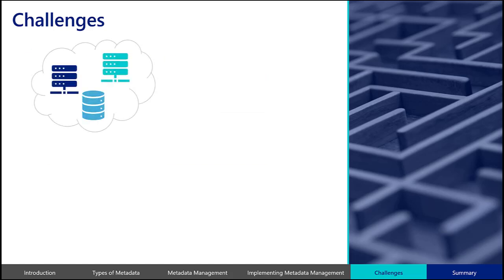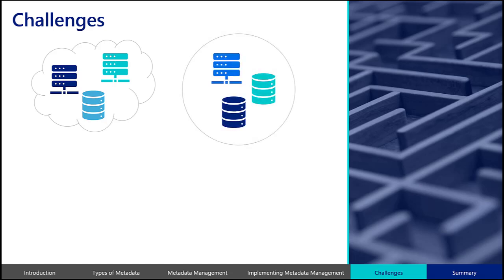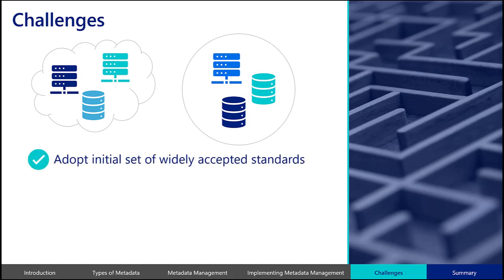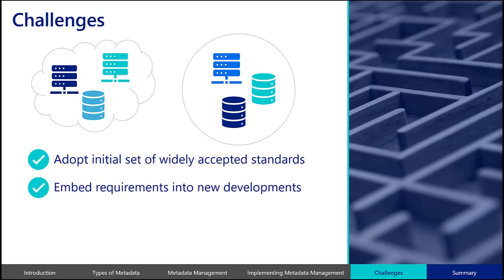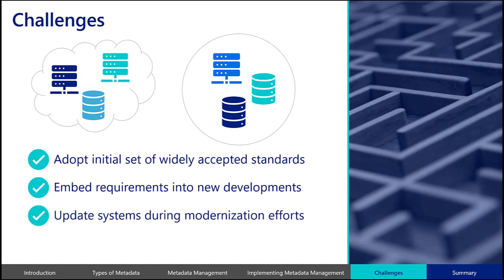Existing data silos, both within and between program areas, may have been designed with inconsistent processes and diverse data formats, making it difficult to establish enterprise-wide organization and control of metadata in the organization. To address this issue, organizations may begin by adopting an initial set of widely accepted metadata standards based on the metadata template, and embed metadata requirements into the development of new data assets and systems to increase compatibility and interoperability over time. Organizations can examine legacy systems to determine which can potentially be updated during modernization efforts to match newly established standards, and create crosswalks for those systems which cannot be updated.